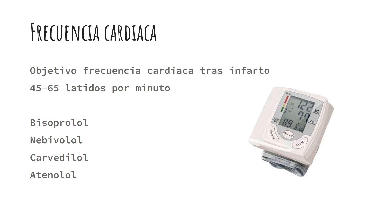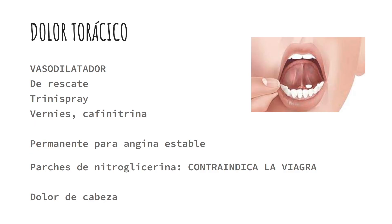Estos son todos los medicamentos que se suelen usar para bajar la frecuencia cardíaca. ¿Qué pasa cuando tenemos dolor torácico? Si es haciendo ejercicio, lo primero es pararse, buscar un asiento y esperar a ver si ese dolor disminuye. En el caso de que no disminuya, el cardiólogo al alta les va a mandar alguno de estos medicamentos de rescate, que son vasodilatadores potentes basados en la nitroglicerina. Hay que tener cuidado porque no les puede dar el sol ni el calor.